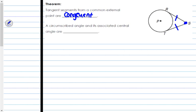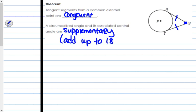A circumscribed angle and its associated central angle are supplementary. Now, circumscribed is a word that we have not really heard or used a lot yet. Don't forget supplementary means they add up to 180. The word circumscribed means outside of the circle.